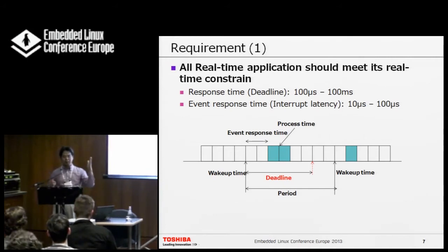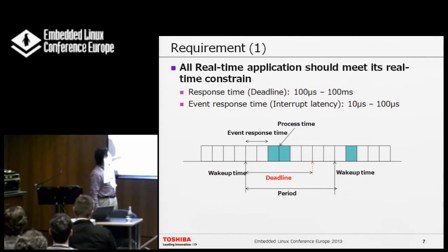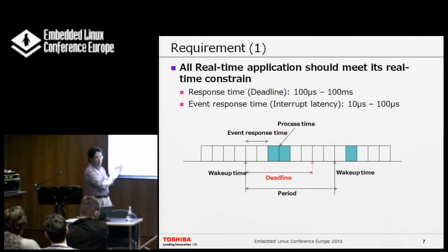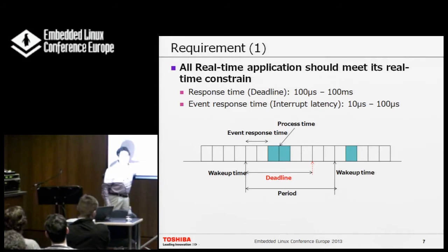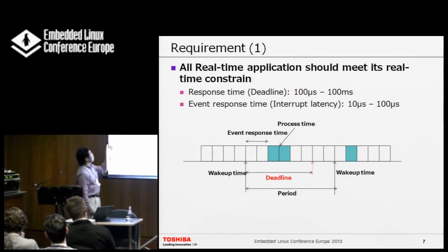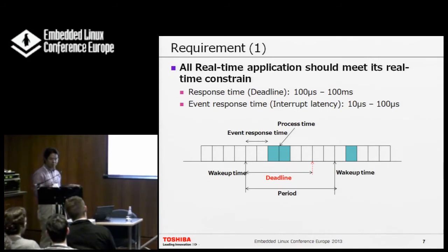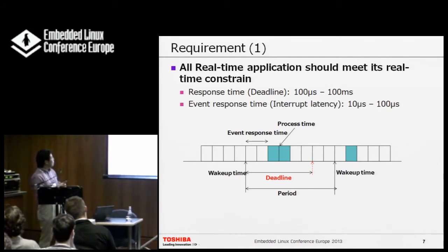The first requirement is, of course, real-time constraints. All real-time applications should meet their real-time constraints. We have many varieties of products and every product has different requirements for real-time constraints. We need to think about the deadline. If we try to meet the deadline, we need to think about when the system can respond. We need response times from 100 microseconds to 10 microseconds for event response time in some cases.